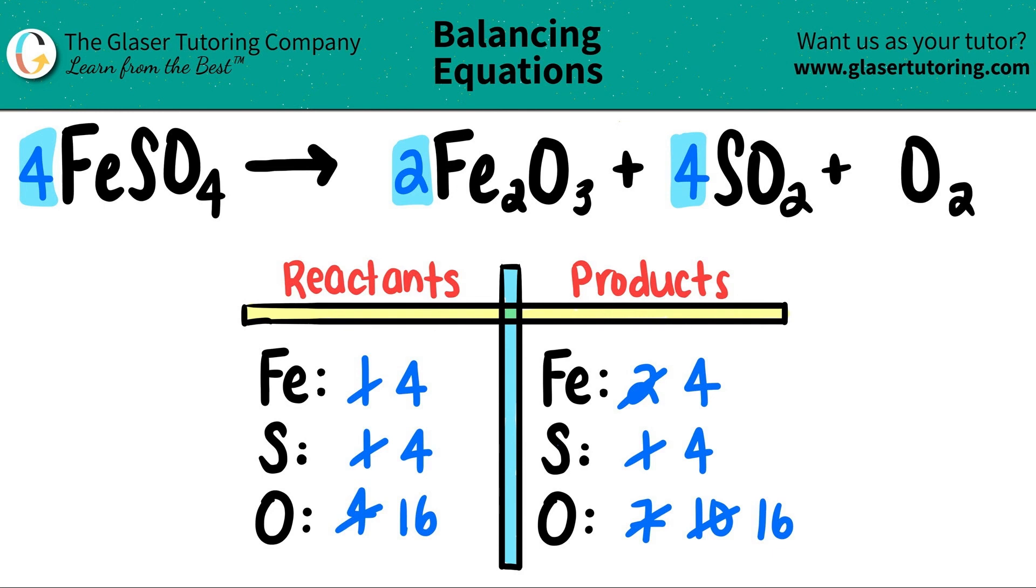So we are finally at the end. Our balance equation is four FeSO4s, which will yield two Fe2O3s plus four SO2s plus one O2.